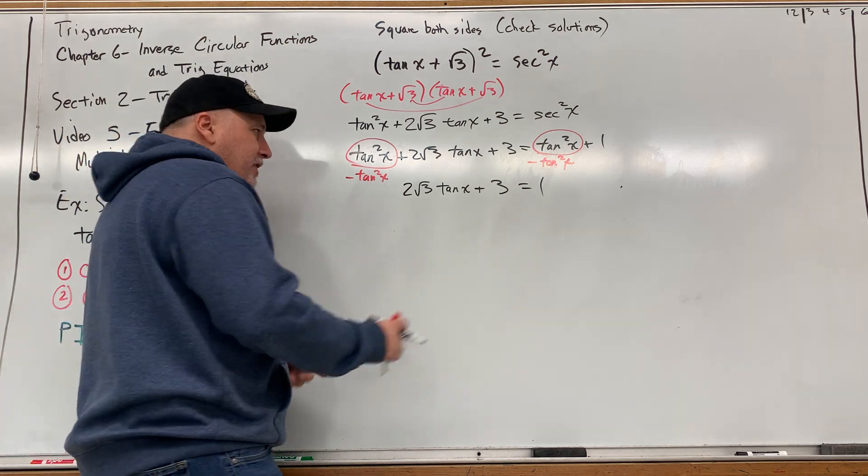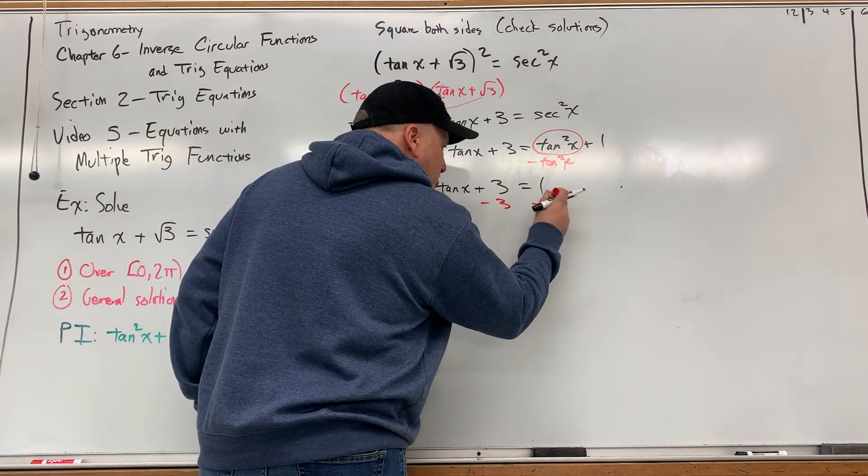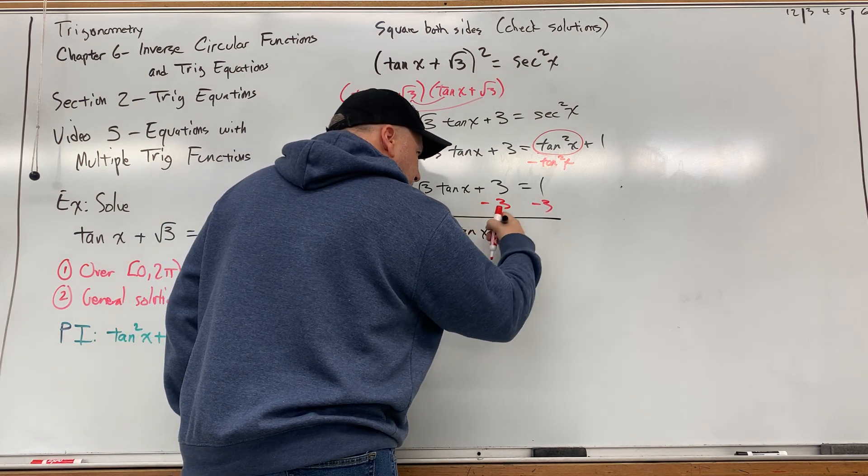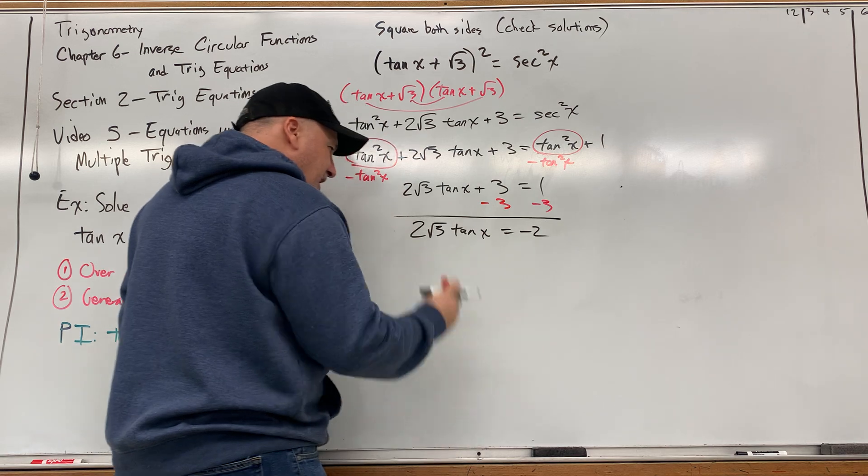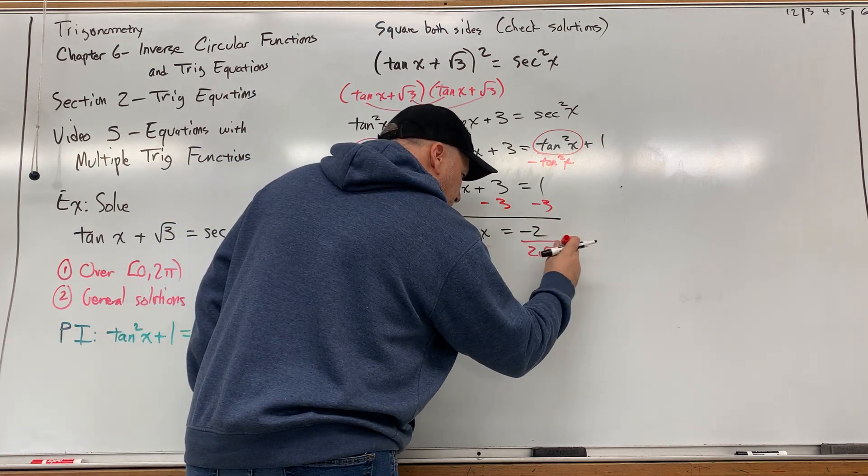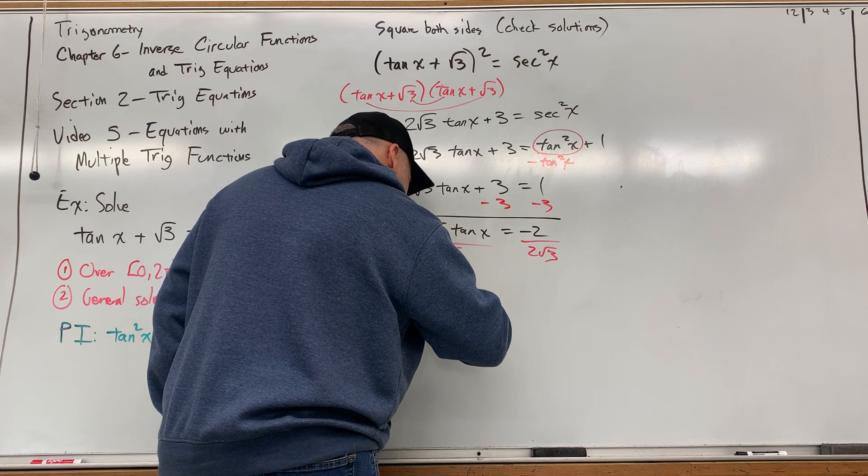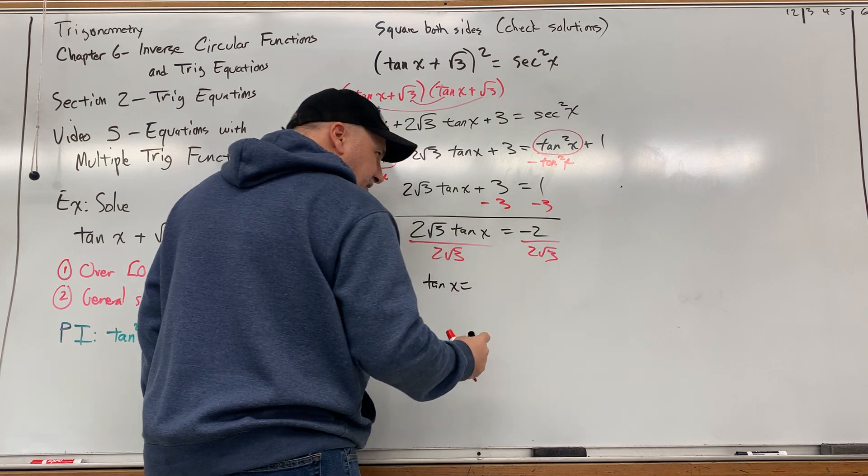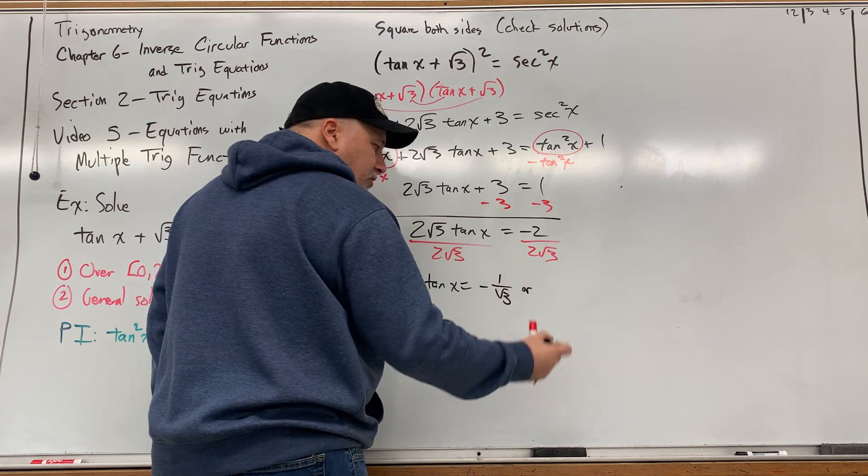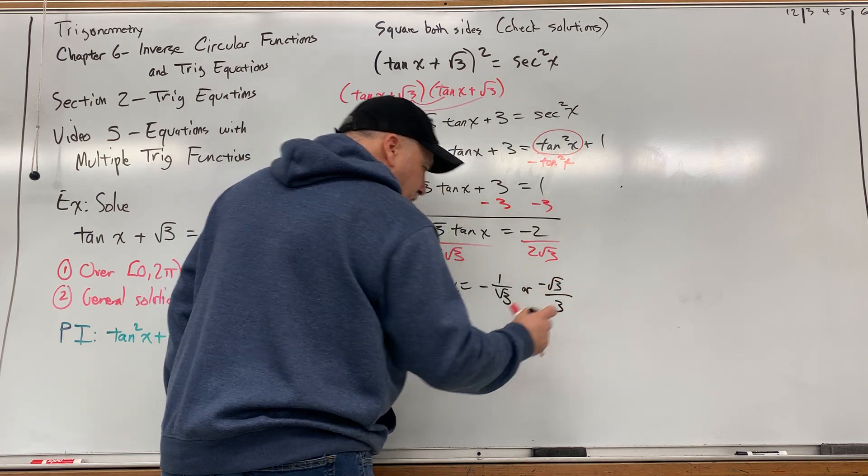So we just start solving. Minus 3 on both sides. We get 2 square root of 3 tangent of x equals negative 2. And then divide both sides by 2 square root of 3. That gives us tangent of x is equal to, we can cancel the 2's and get negative 1 over the square root of 3, or if we wanted to rationalize the denominator, negative square root of 3 over 3.